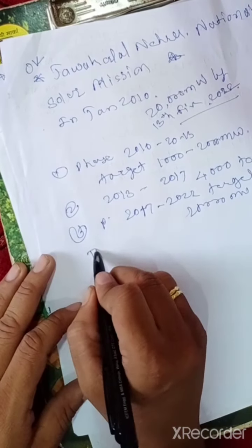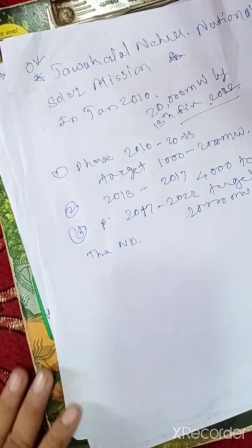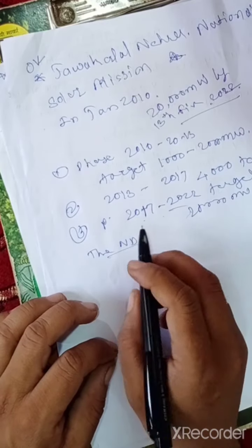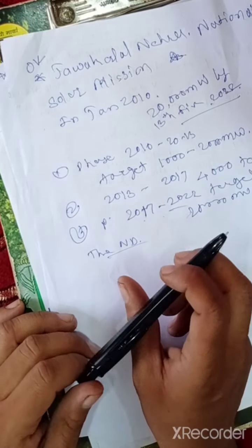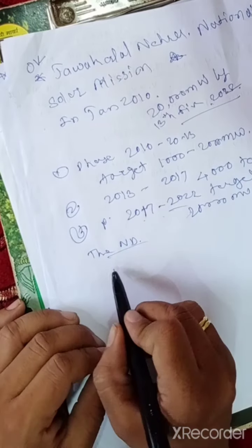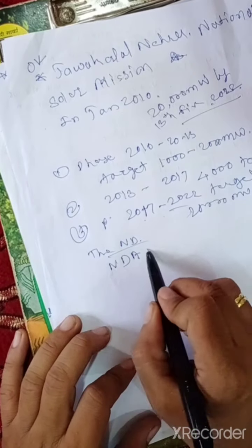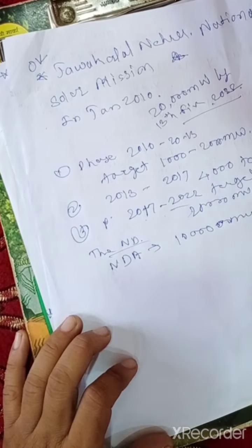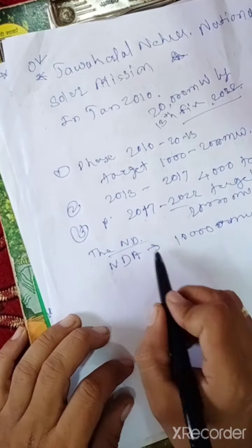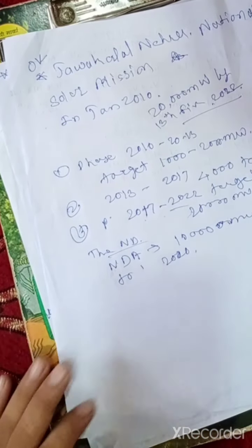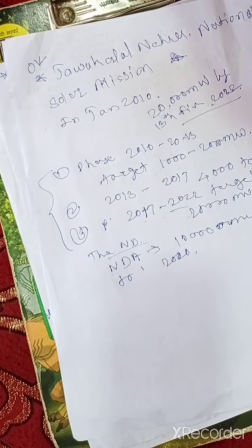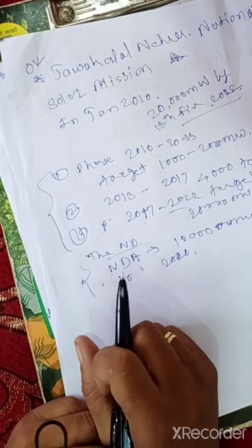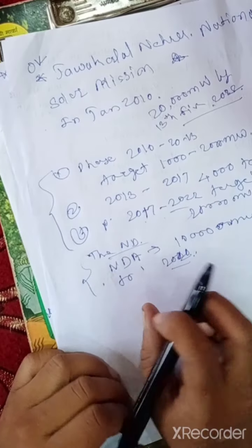The NDA government has scaled up the target to fivefold at one lakh megawatt, that is 100 gigawatt, to be achieved by 2022. This is the phases under the UPA government, but the NDA government scaled this target up to one lakh megawatt, that is 100 gigawatt, up to 2022.